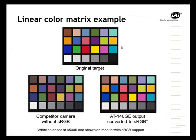If you can make some color conversions, you can see what's going on here. The original target is shown at the top, and below is a color camera that cannot change its color matrix and does not have sRGB — you can see how washed out the colors are. On the bottom right is a JAI 1-megapixel camera, the AT140, where they were able to convert to sRGB, and you can see it's a much closer representation of the original target.